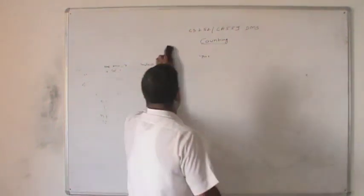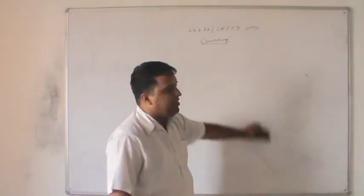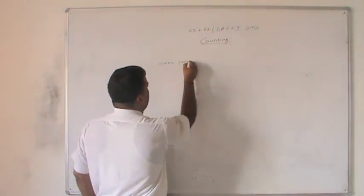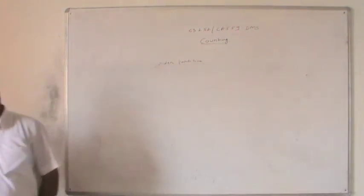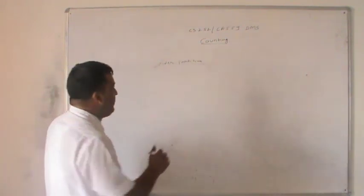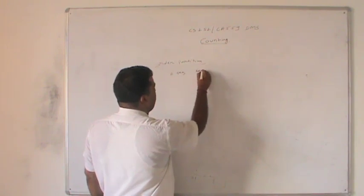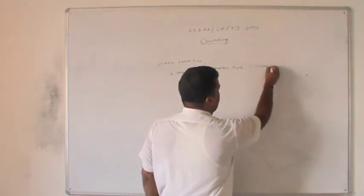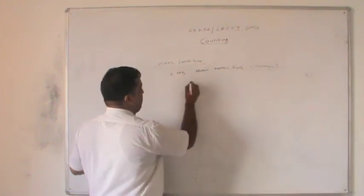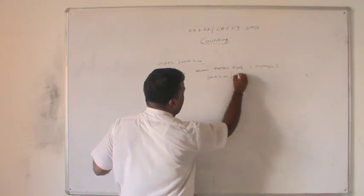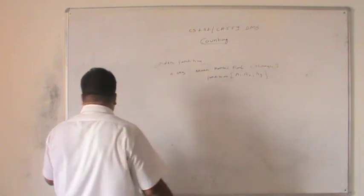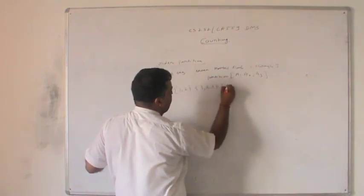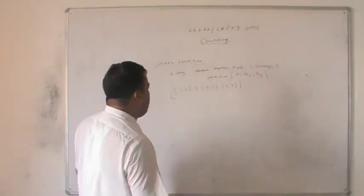Next we discuss partition sets: ordered partition and unordered partition. For ordered partition, take a bag A containing seven marbles labeled 1 through 7, to be put into partitions A1, A2, A3 with 2, 3, and 2 elements respectively. The number of ordered partitions is C(7,2) times C(5,3) times C(2,2).